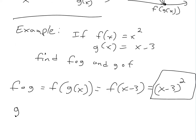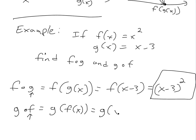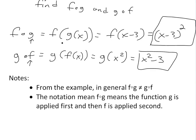For g circle f, we get g of f of x. Now we start with f first, so f of x equals x squared, and we put that into g: g of x squared equals x squared minus 3. So g circle f equals x squared minus 3.